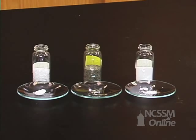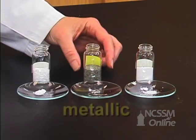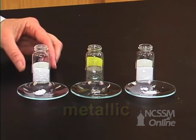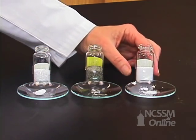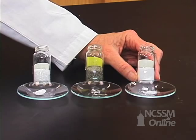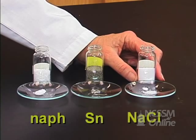There are three types of solids. We're going to look at an ionic compound, a metallic compound, and a covalent compound. Ionic compounds are held together by electrostatic forces. We're going to look at the characteristics of some of those.